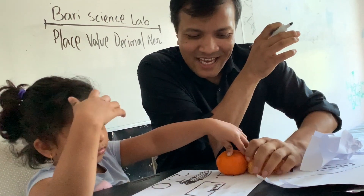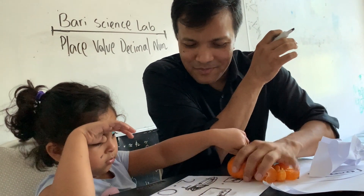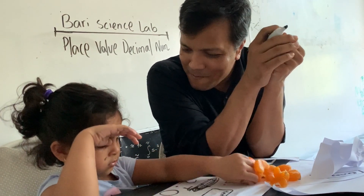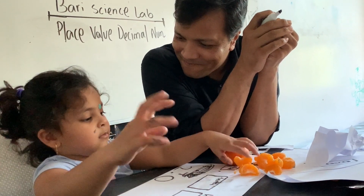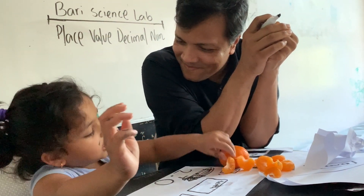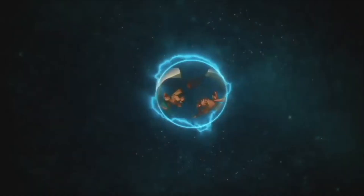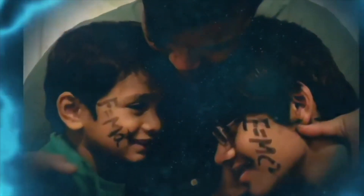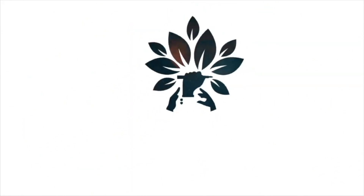It becomes 2.0. How many oranges do I have? Ten slices make an orange, so I have two oranges. Subscribe to Bari Science Lab to fall in love with math and science, especially programming.